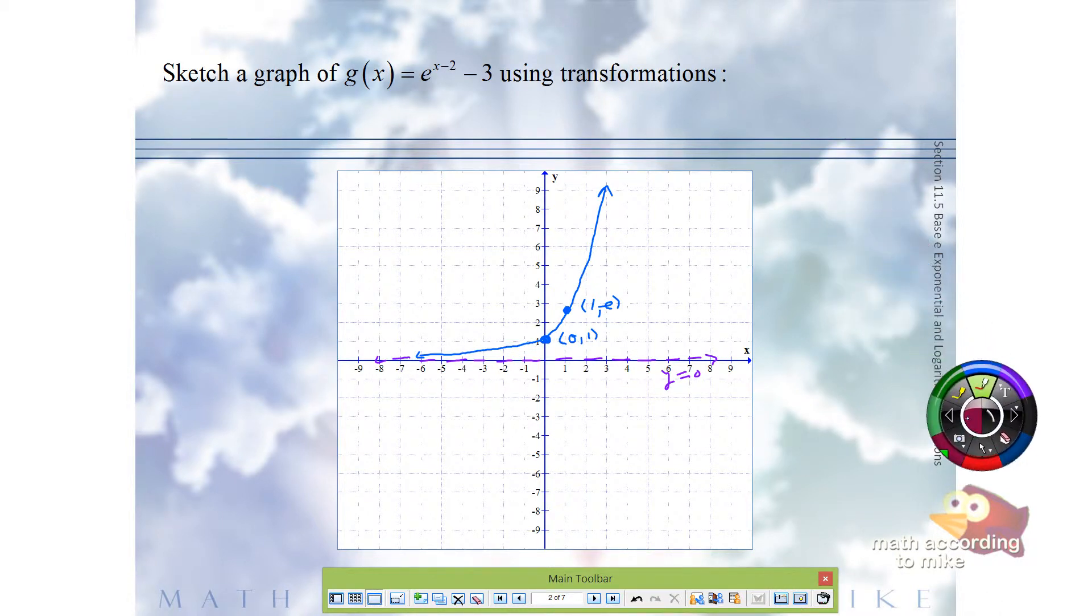So let's talk about the two steps necessary to perform this transformation of g of x equals e to the x minus 2 minus 3. The x minus 2 is going to say we first go right 2 units. And the minus 3, since we're subtracting 3 from the function, this says then we go down 3 units.